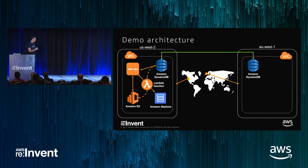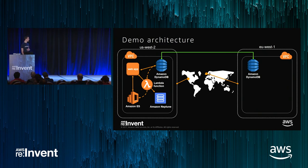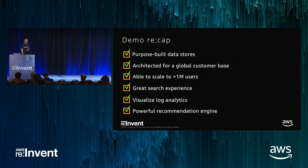What we've shown is a multi-region application. We used DynamoDB Global Tables to replicate data across to our other region in the United States. We used Lambda to connect our DynamoDB product table with the Amazon Elasticsearch service. And we used Neptune to provide a really powerful recommendation engine. Let me welcome Tony Petrosyan up on stage to tell you more about what's new with the DynamoDB service.